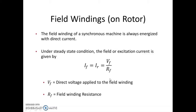This is also called field current or rotor current, which is given by Vf divided by Rf, where Vf is the voltage given to the field winding and Rf is the resistance of the field winding.